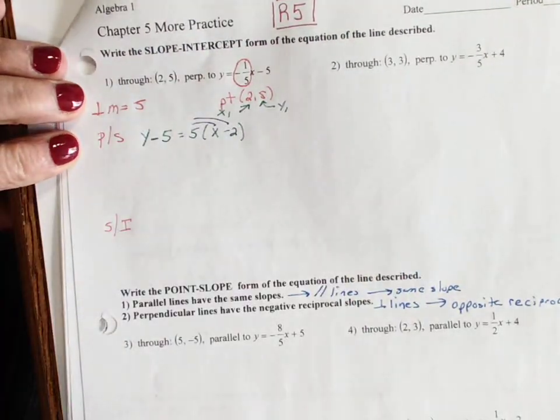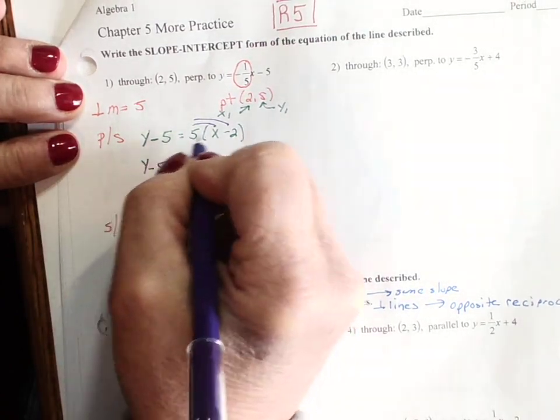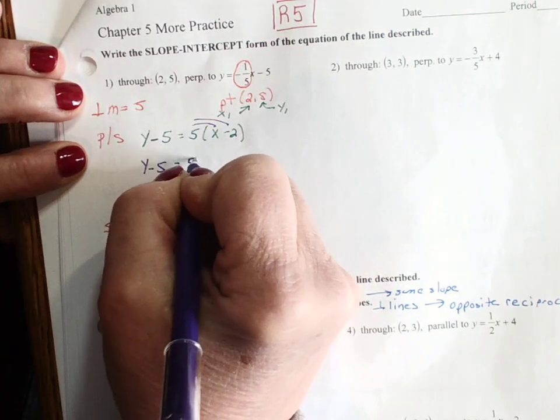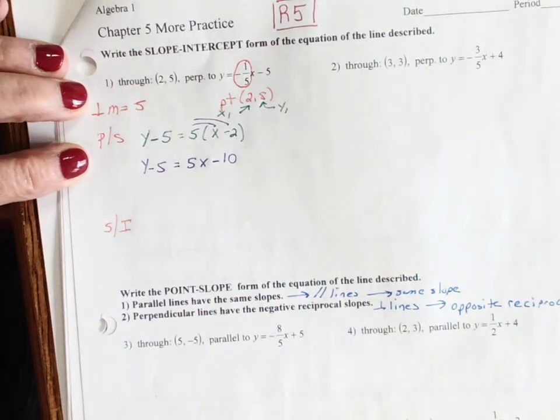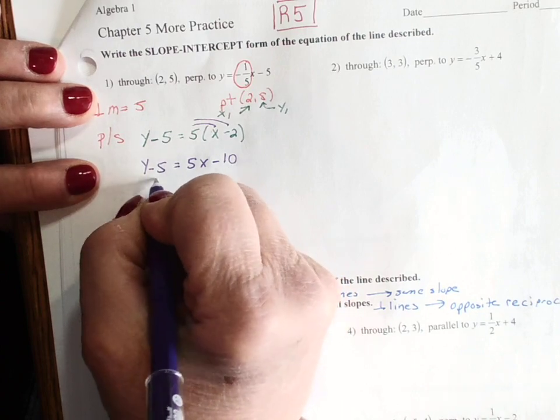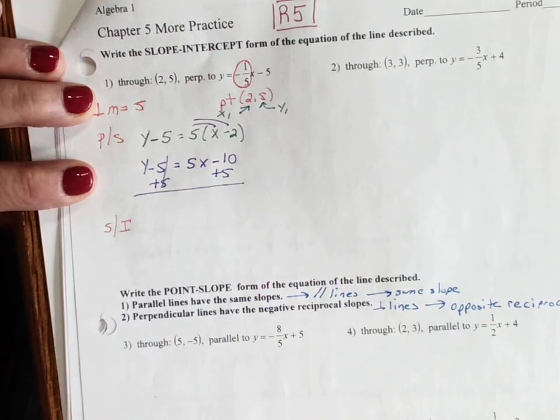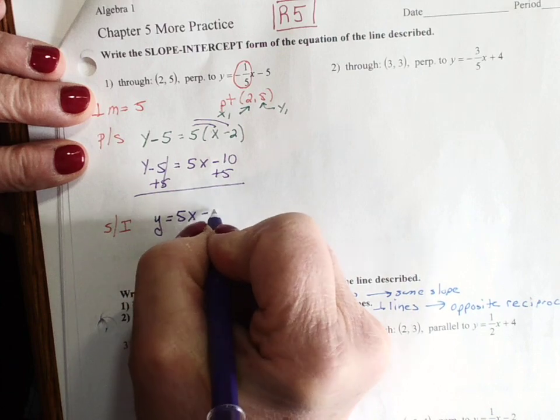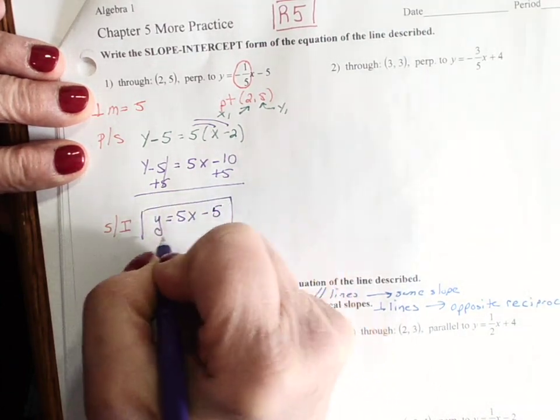So here, y minus 5, and we're going to distribute the 5 on the right hand side first, equals 5x, 5 times x, 5 times negative 2, minus 10. Now we're going to get the y by itself, so we add 5, we add 5, and we get y equals 5x minus 5. That is our answer.